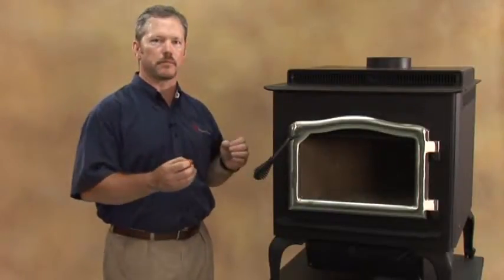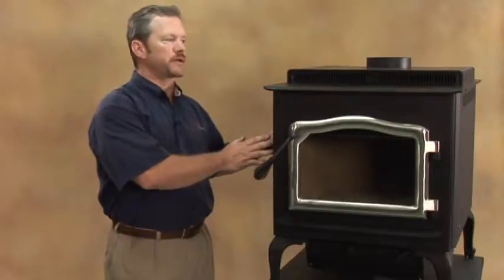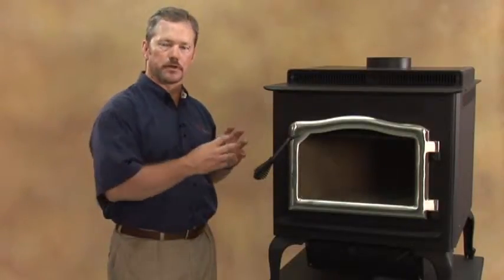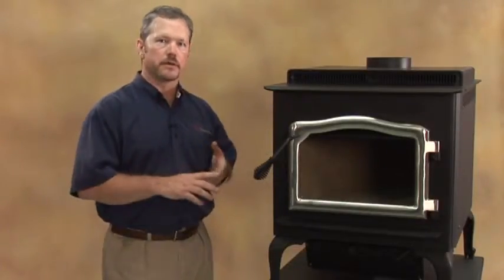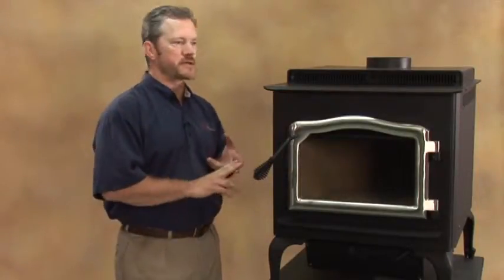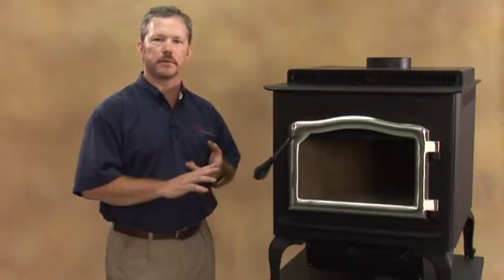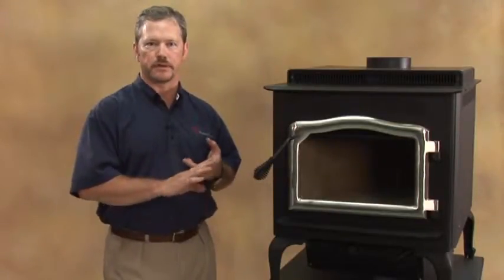The difference that you'll see between the three models is going to actually be the depth. So basically what that's going to allow you to do is to be able to put a larger piece of wood in any given stove. Your 2100 is going to want to use about a 16 to 18 inch wood, your 2600 is going to use an 18 inch, and your 3000 will be able to go all the way up to a 22 inch stick of wood.